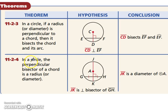Now, this one is just kind of a reverse of that. In a circle, the perpendicular bisector of a chord is a radius or diameter. So if JK bisected the chord GH perpendicularly, so it cut it in half and did it at a 90 degree angle, then that means that JK has to be the diameter and AK would have been the radius.